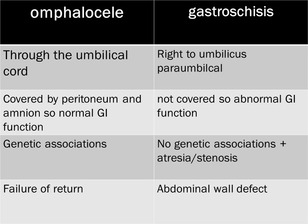A table here highlights the key differences. In omphalocele, the gut herniates through the umbilical cord; in gastroschisis, it herniates to the right of the umbilicus. In omphalocele, it is covered by peritoneum and amnion; in gastroschisis, it is not, leading to abnormal GI function. Gastroschisis has no genetic abnormalities, so if the GI problems are resolved, prognosis is better than omphalocele. In omphalocele, the herniated bowel fails to return; in gastroschisis, physiological herniation and return happened normally, but a lateral wall defect led to herniation of bowel to the right of the umbilicus.